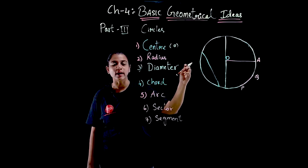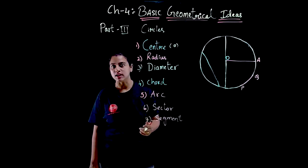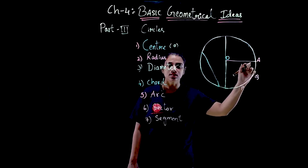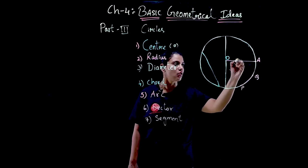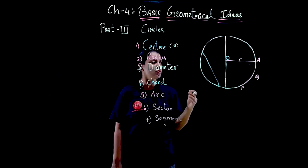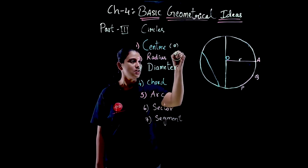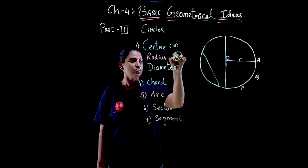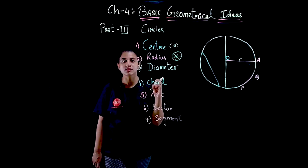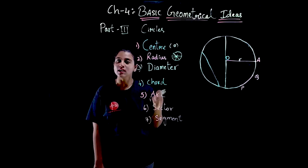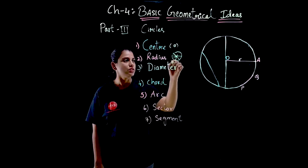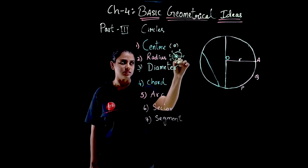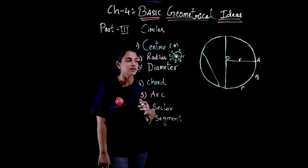From the center, if you draw a line to the circle touching any point on the circle — a circle is nothing but so many points together — the line drawn from the center to any point on the circle is called the radius. For example, OA: from the center we are drawing a line which touches the circle, so this distance is called the radius. You can draw lines from the center in any direction and they will all be equal — the distance from the center to any point on the circle is always equal, which is the radius.